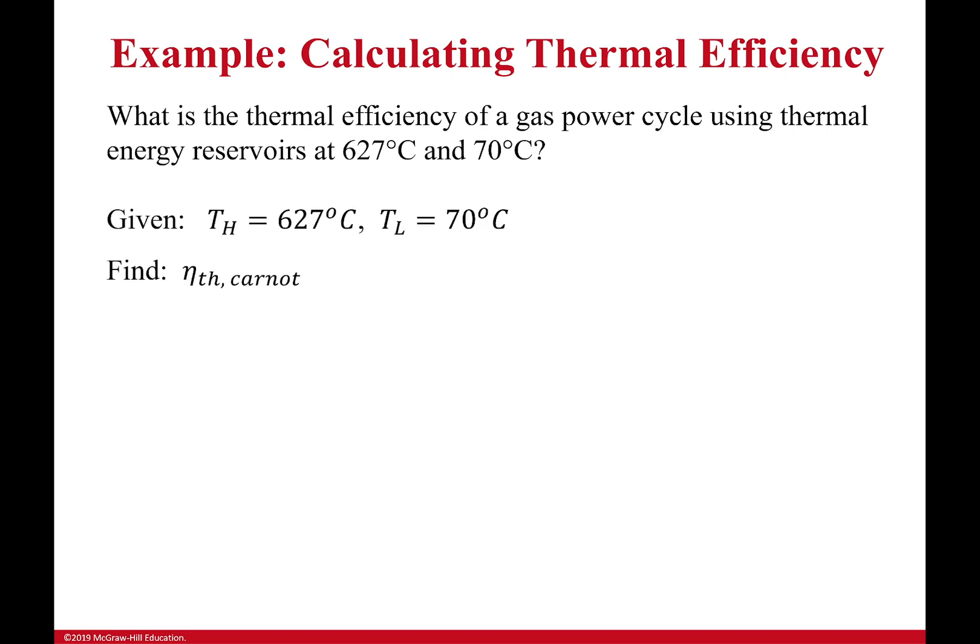Okay, so we've got T high, 627 degrees Celsius. T low is 70 degrees Celsius. These are in degrees Celsius. We're going to have to convert to Kelvin. Good thing they gave us this. It makes it a little bit easier when we're converting.